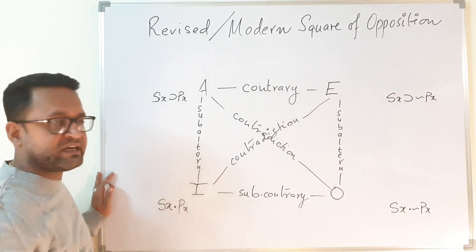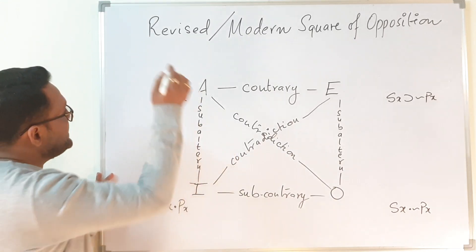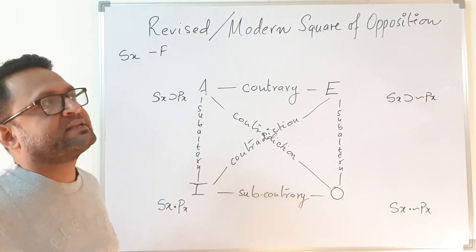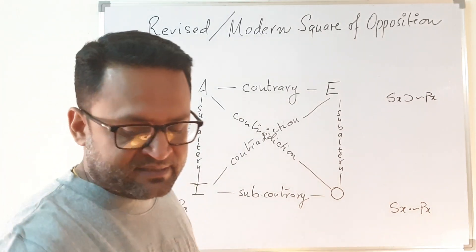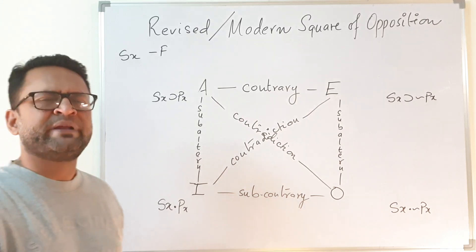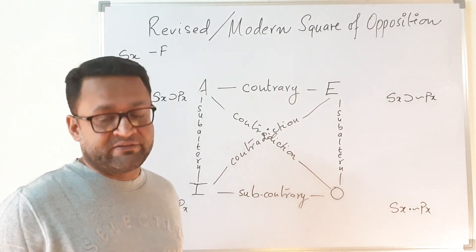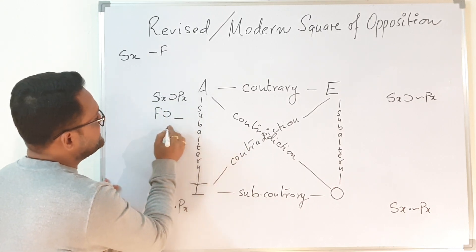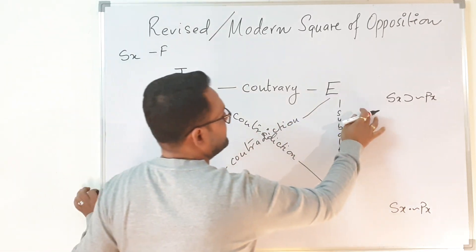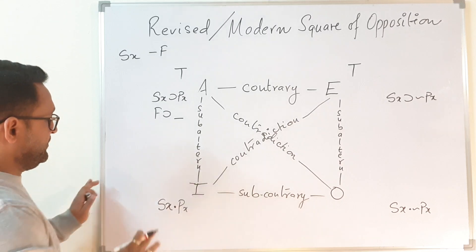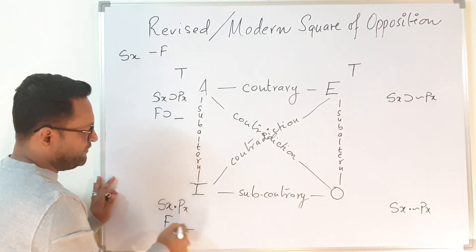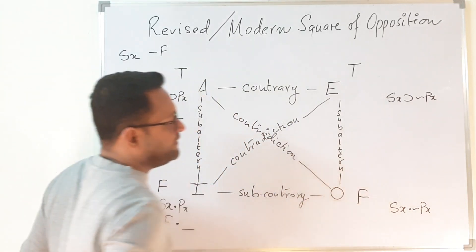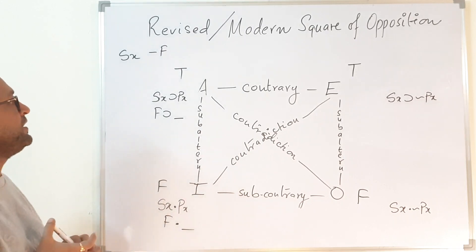The key observation is that universals are expressed as implications, whereas particulars or existentials are expressed as conjunctions. Now suppose the value of Sx is false — meaning the subject class is empty. For the A proposition: false implies something is always true. Similarly for E: false implies something is true. But for the particular propositions, false dot something — a conjunction with false — is always false.